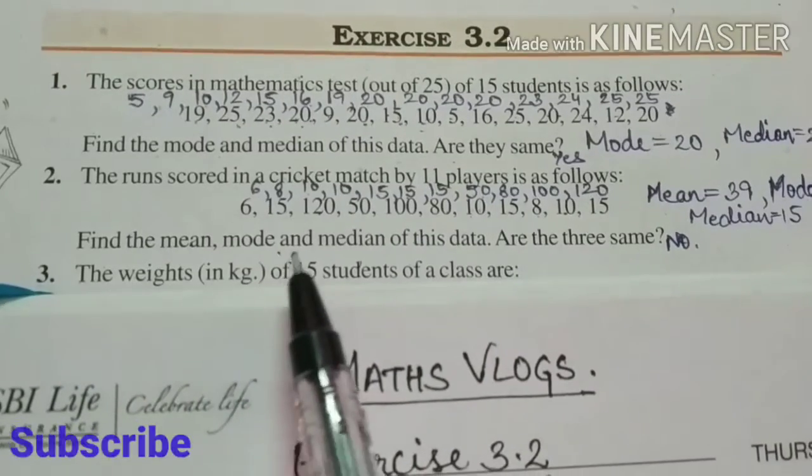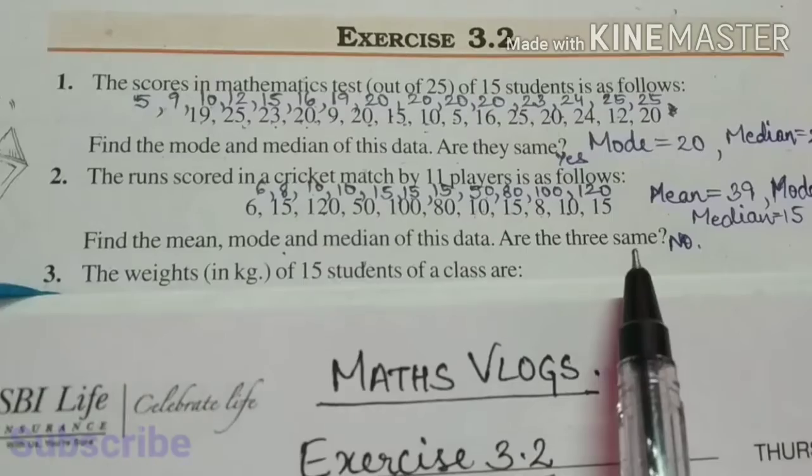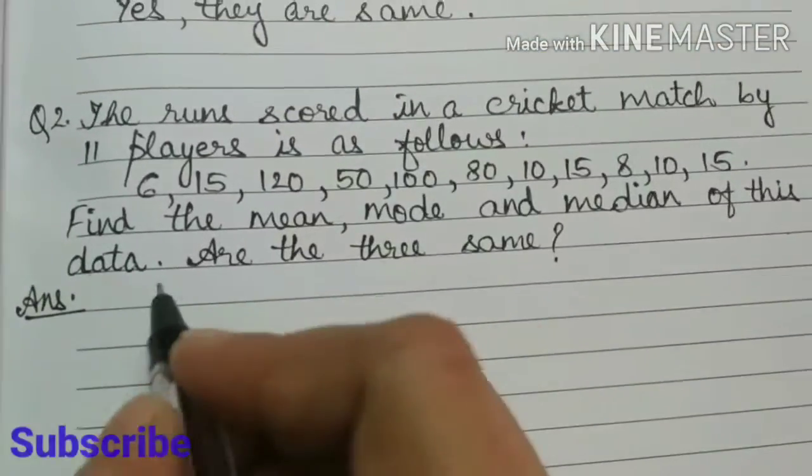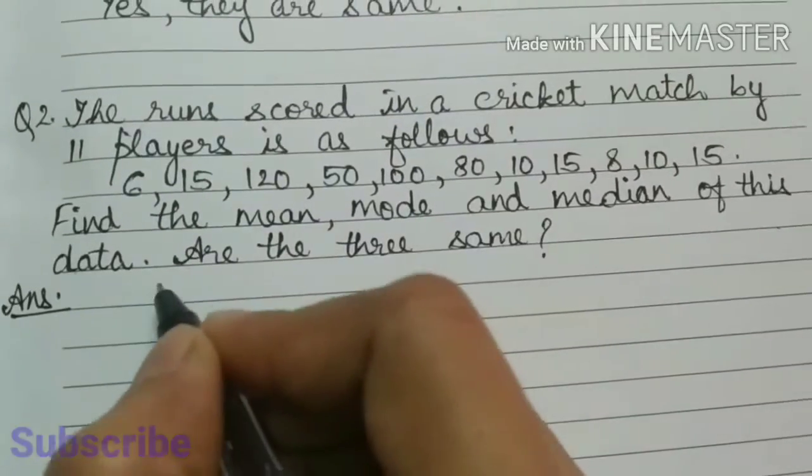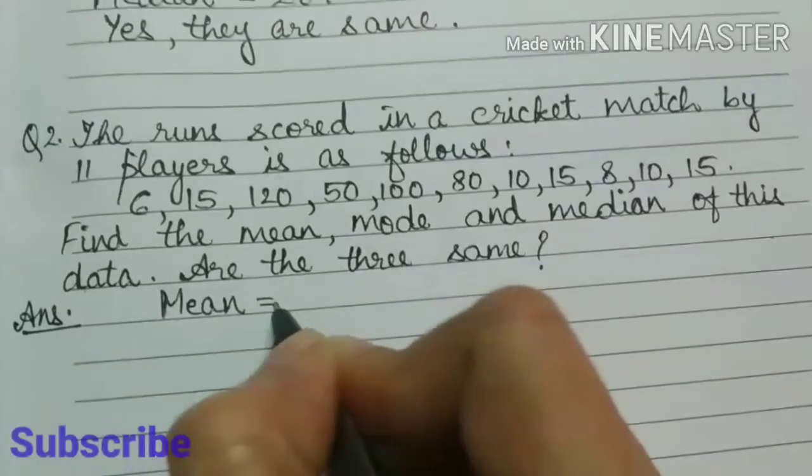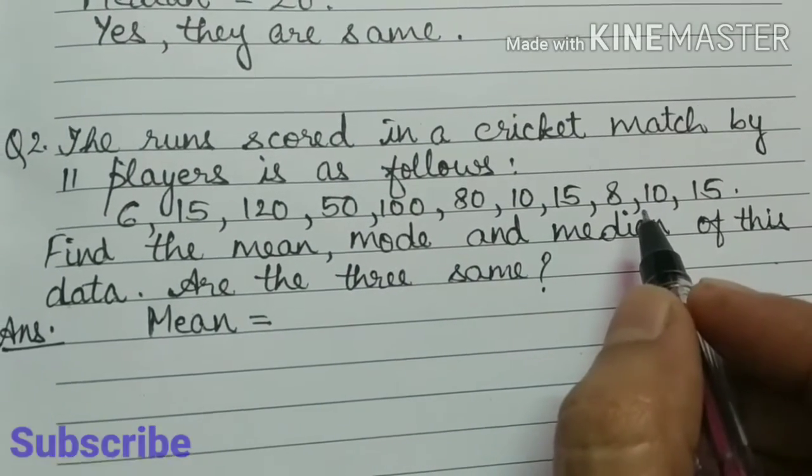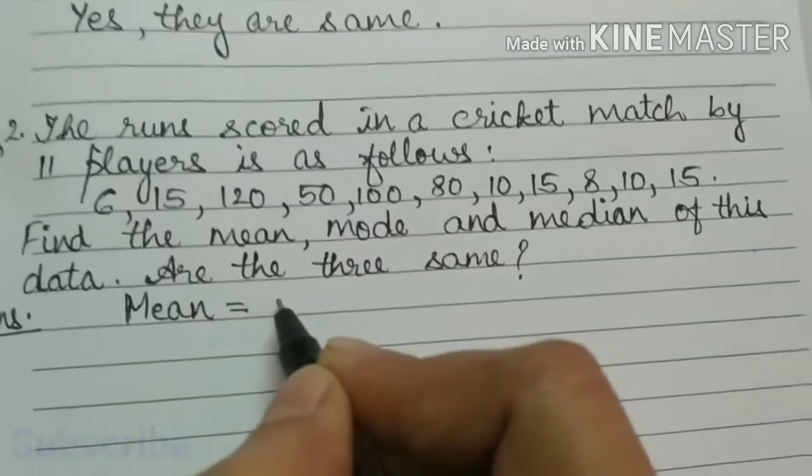Find the mean, mode, and median of this data. Are the three same? In the last exercise we tried to find mean like that only. We can find mean is equal to all observations divided by number of observations.